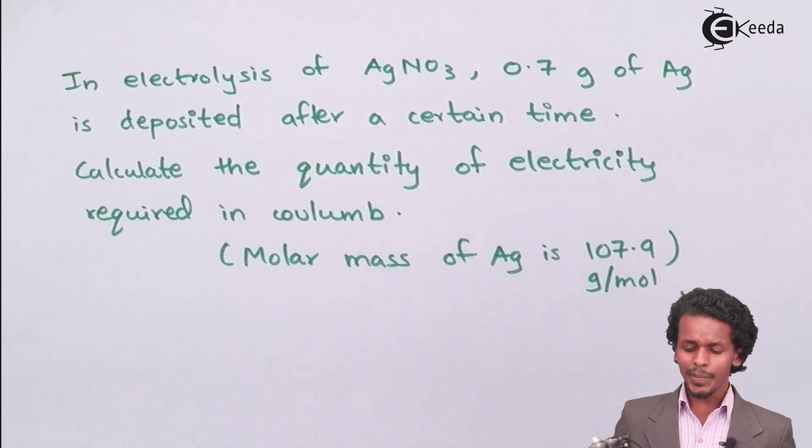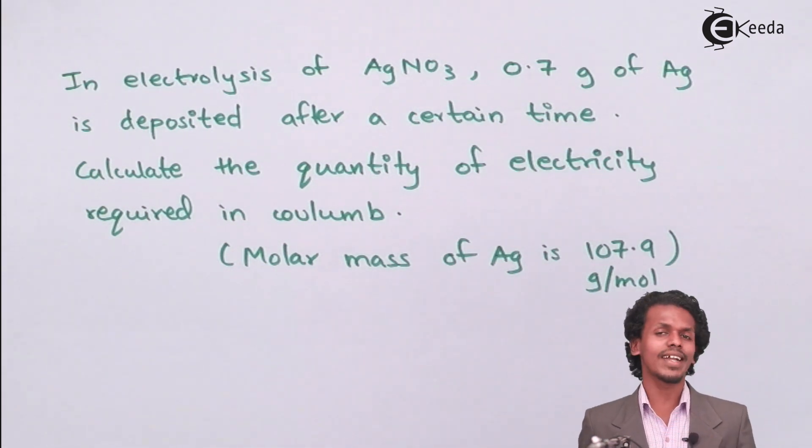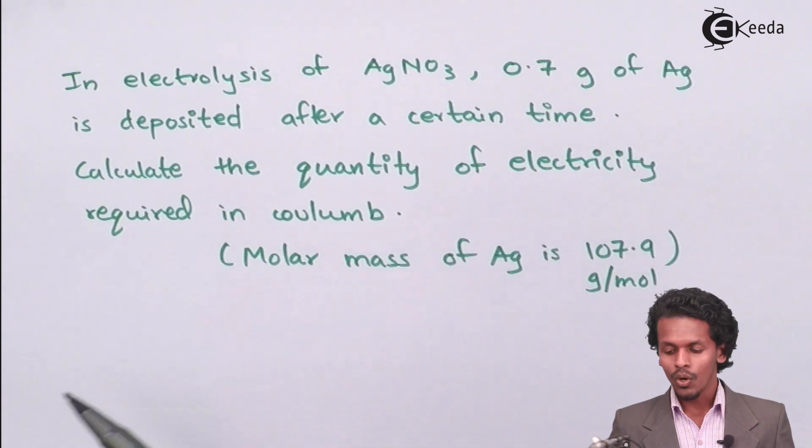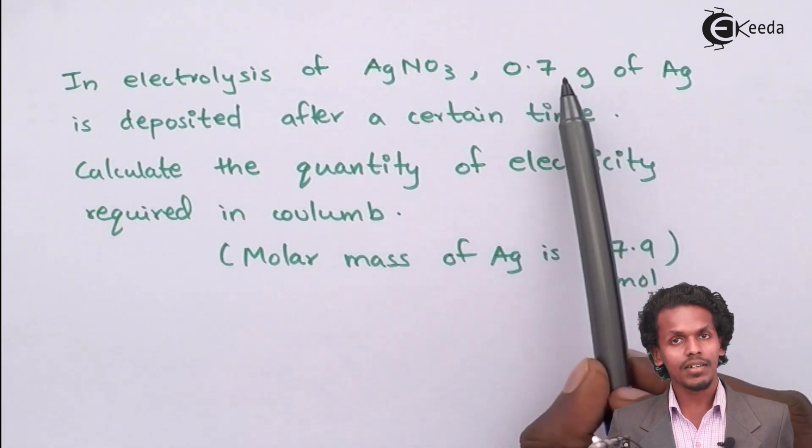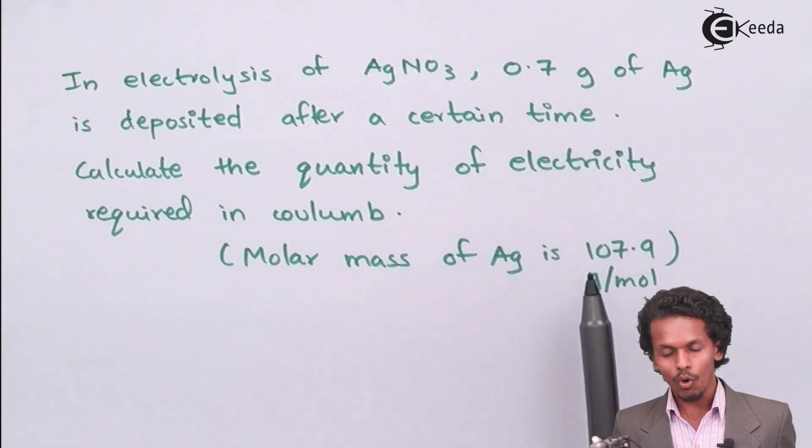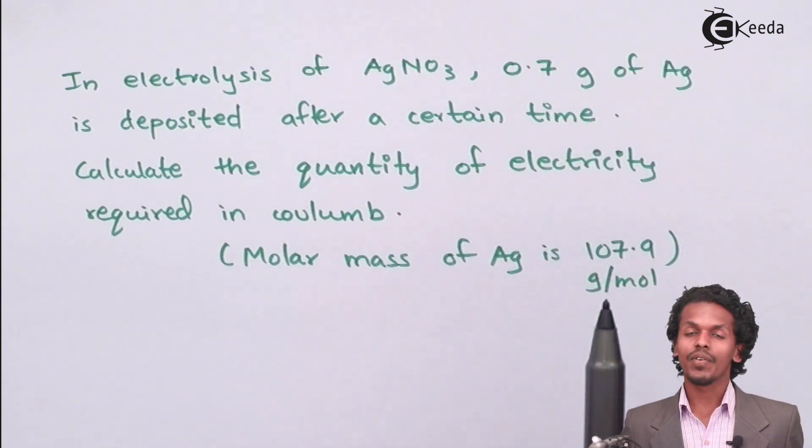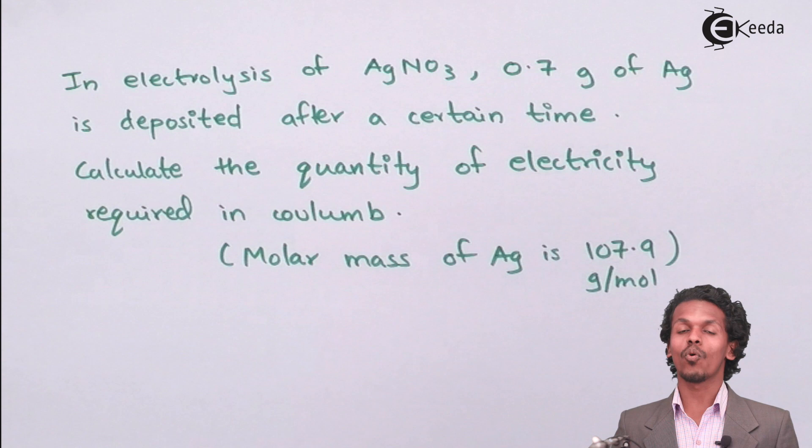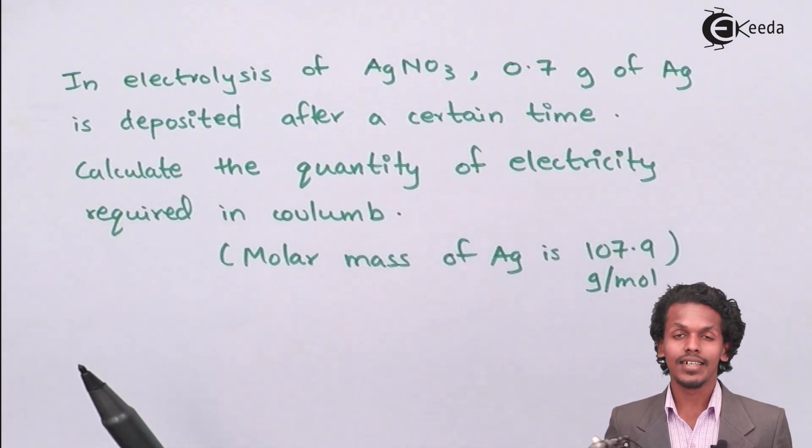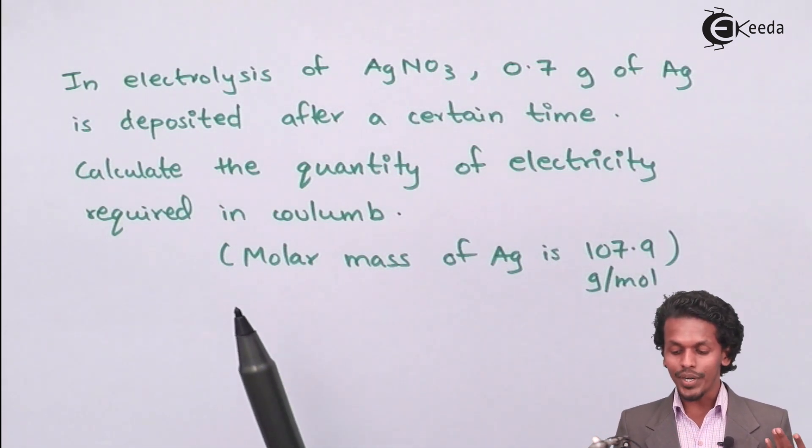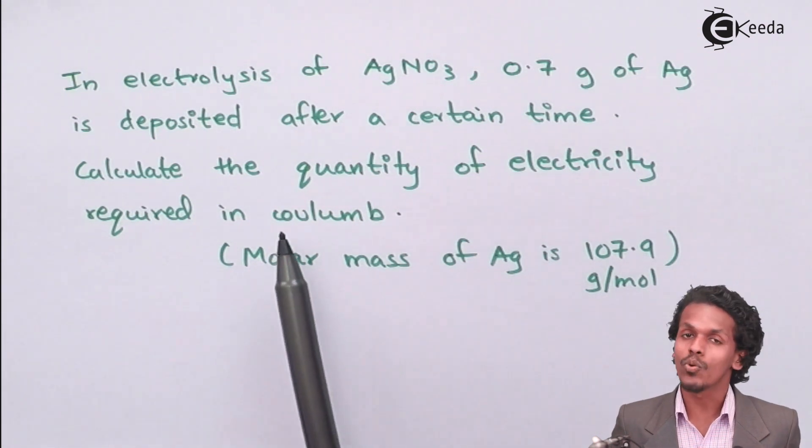In this case, let me tell you what data has been provided to us. Only the weight is provided and the molecular weight is provided, and from that we have to calculate the quantity of electricity required in coulomb.